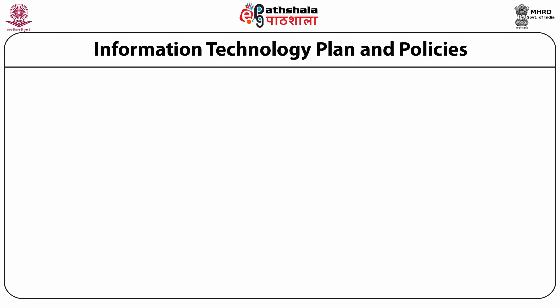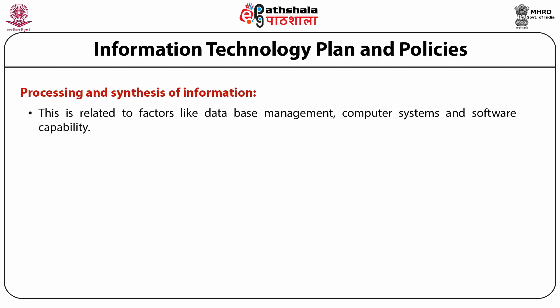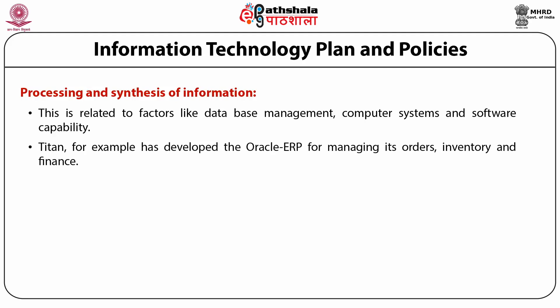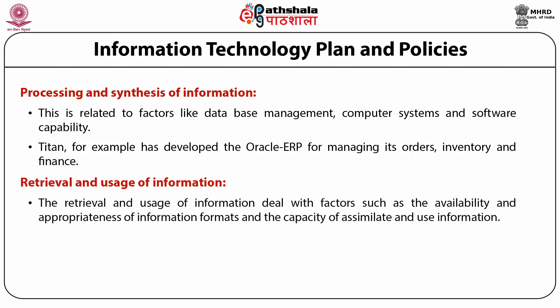Once information has been acquired, the processing and synthesis of information is very important. Organizations need to have a proper database management system in place. Computer systems need to be upgraded and software capability needs to be enhanced. For example, organizations like Titan have developed their own Oracle ERP system that helps them to manage orders, inventory and finance. The next important area of planning is the retrieval and usage of information, which deals with availability and appropriateness of information formats and the capacity to assimilate and use information.